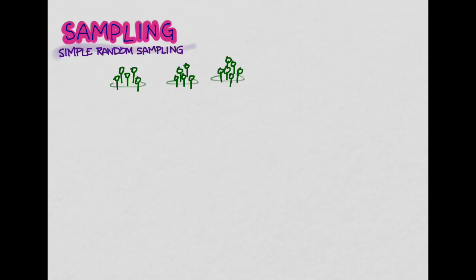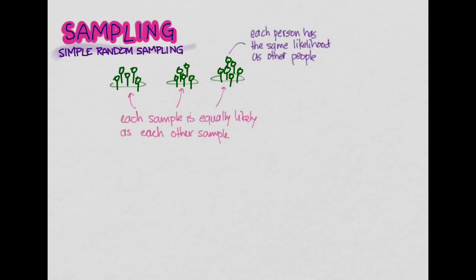Now the key element of simple random sampling is that each one of the different samples that you could get, and here it looks like they're about size 5, each one of these has equal probability of occurring. Also, each person has the equal probability of being selected. So each sample is just as likely as any other sample of being chosen, and each person has the same likelihood of being selected as another person.